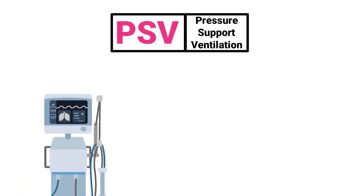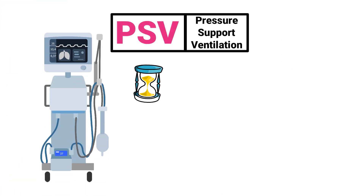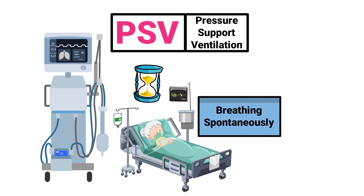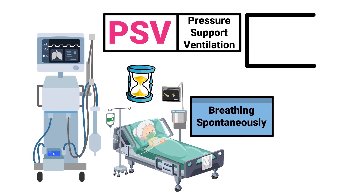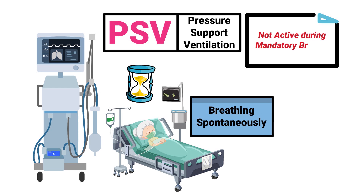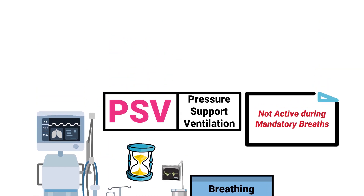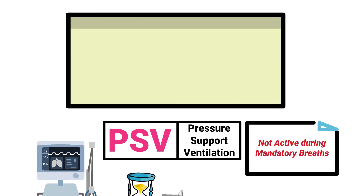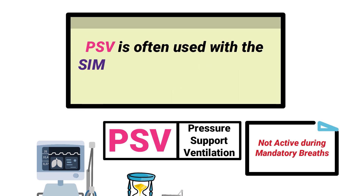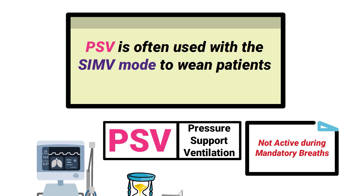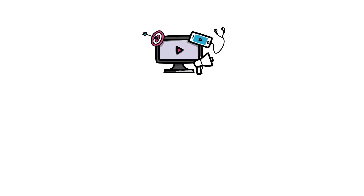Pressure support can be used with any ventilator mode as long as the patient is breathing spontaneously. It's important to remember that pressure support is not active during mandatory breaths. Pressure support is often used with the SIMV mode to wean patients from the machine.